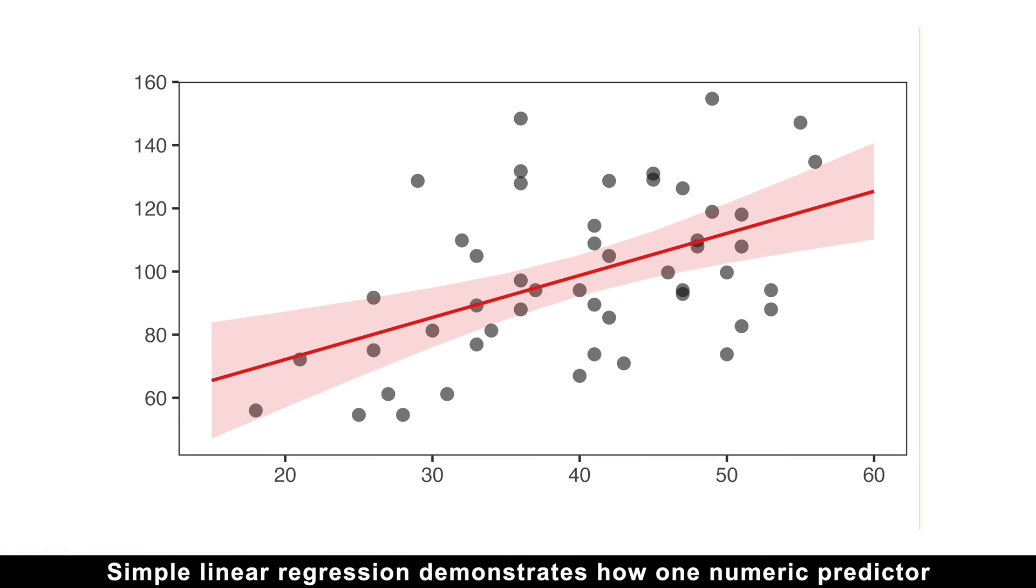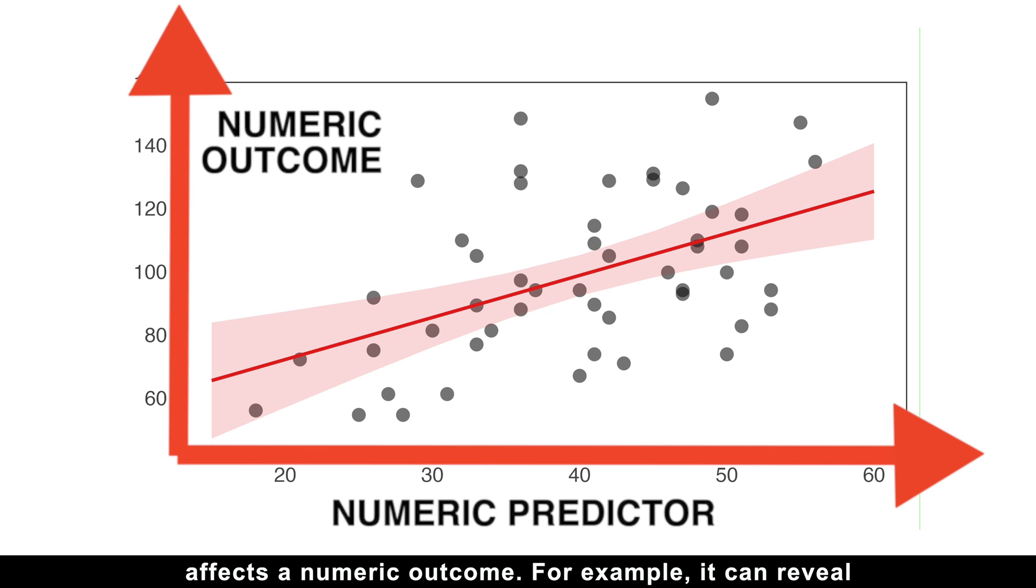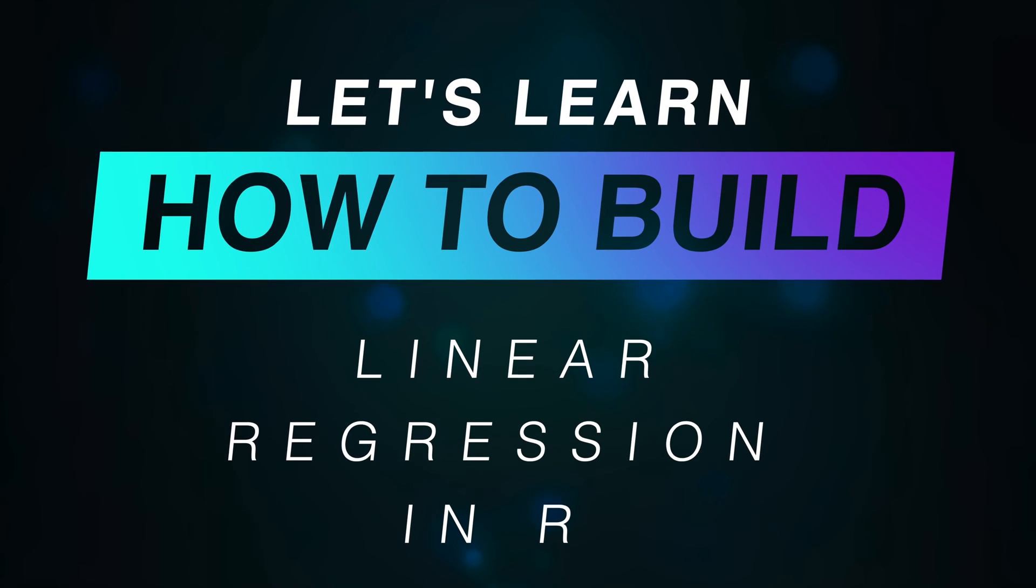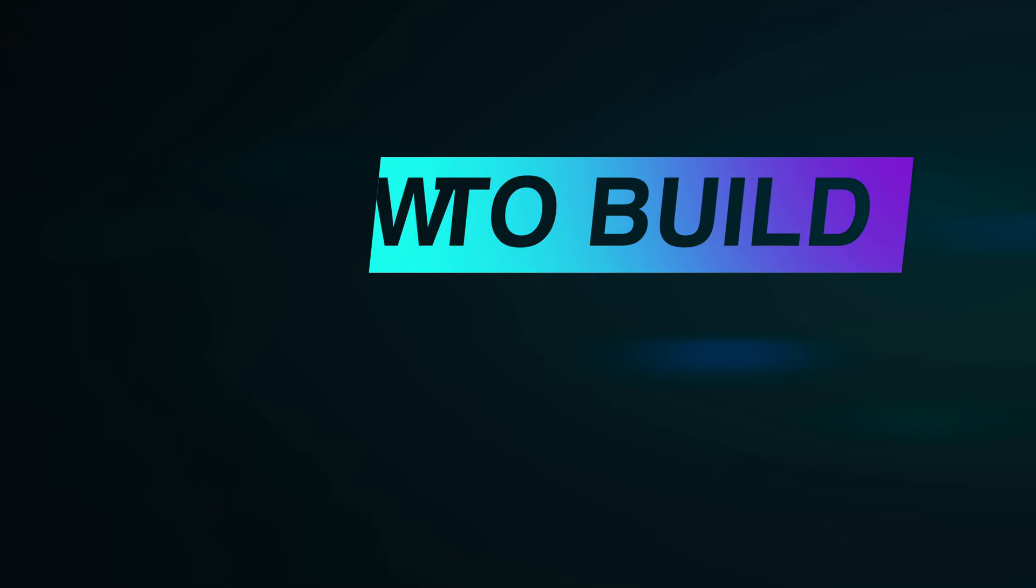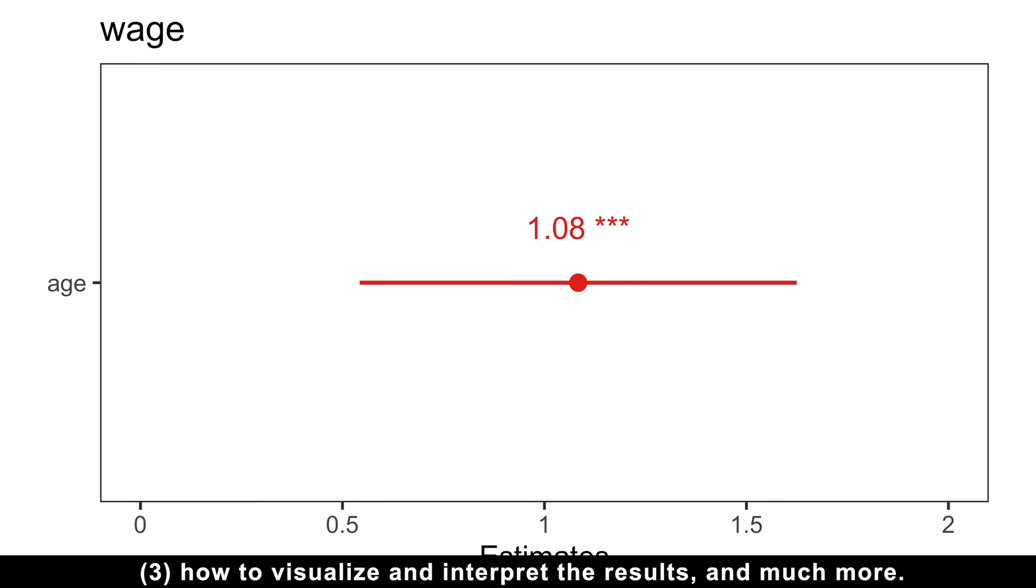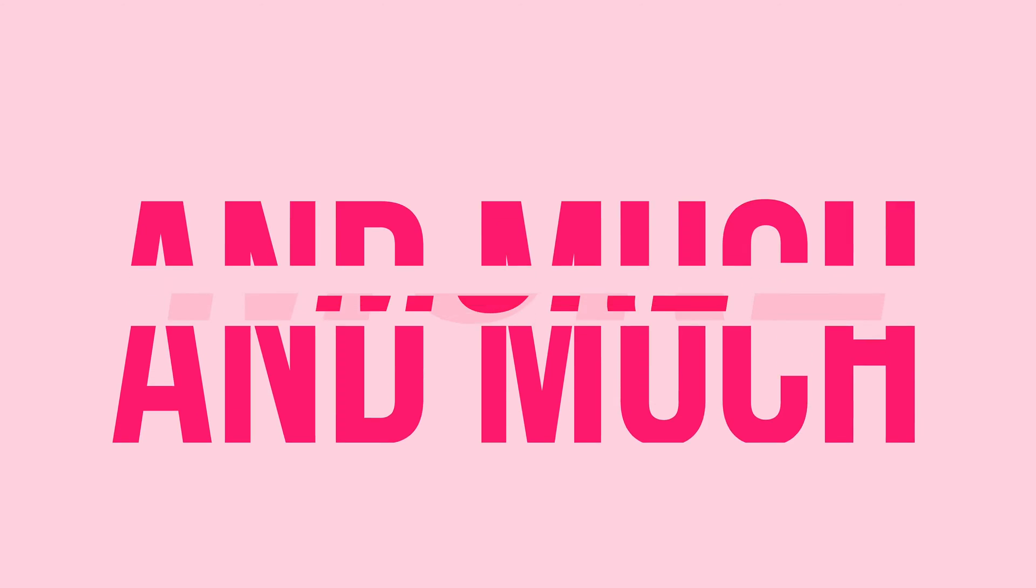Simple linear regression demonstrates how one numeric predictor affects a numeric outcome. For example, it can reveal whether age actually translates to higher paychecks. Let's learn how to build a linear regression in R, how to check all model assumptions with one simple and intuitive command, how to visualize and interpret the results, and much more.